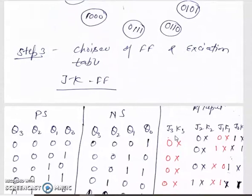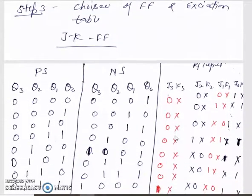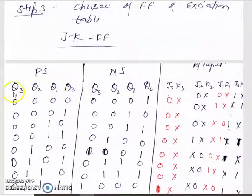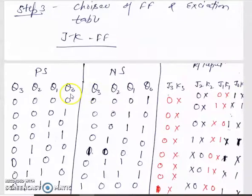The excitation table for the counter has present state and next state columns. Because 4 flip-flops are required, we need 4 input pairs for every flip-flop: J0, K0, J1, K1, J2, K2, J3 and K3. The present state consists of Q0, Q1, Q2, Q3, and similarly the next state of all flip-flops. The process is the same as writing the excitation table — first look at Q0.